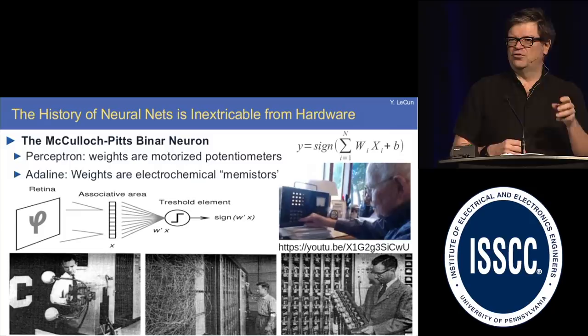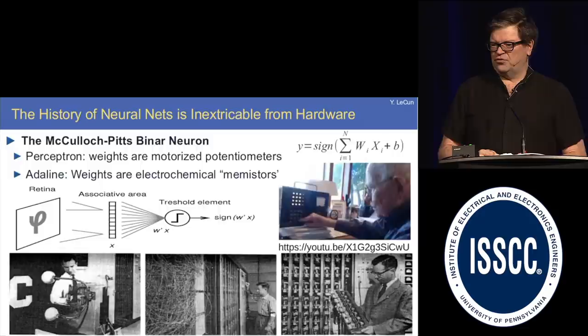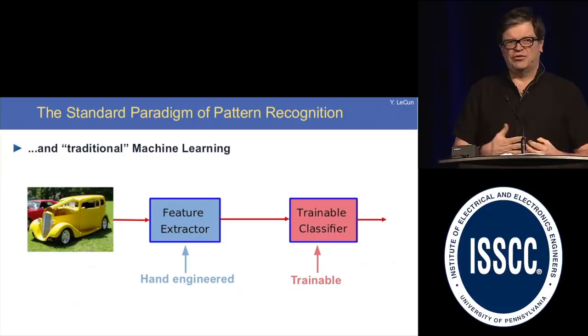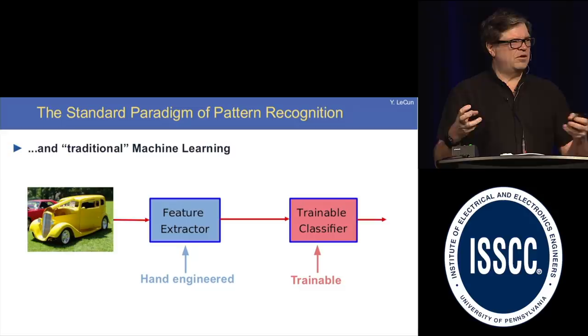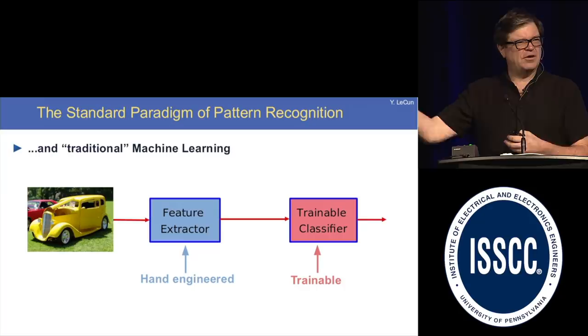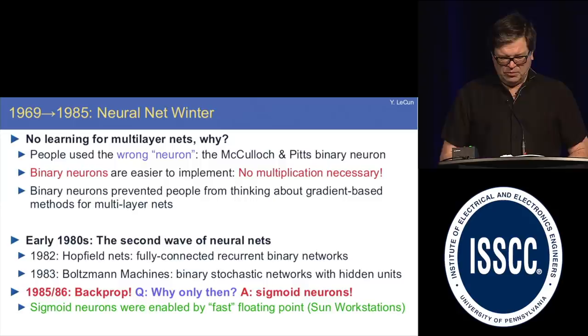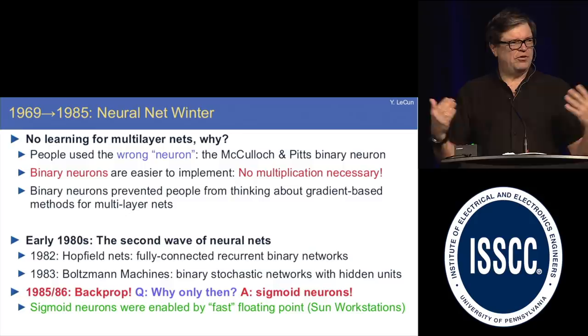So learning consisted in pressing a button and having motors turn. There were also competing implementations like Bernie Widrow's Adaline system that used electrochemical cells. What happened then was the creation of the standard paradigm for pattern recognition that survived until fairly recently — where you take a signal, say an image, have some hand-engineered module that turns it into a feature vector, feed it to a trainable classifier, and only the classifier is trainable.